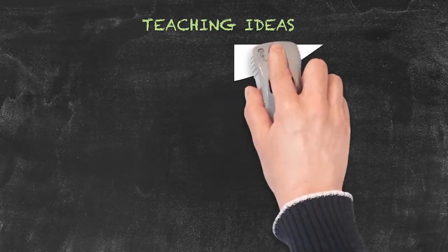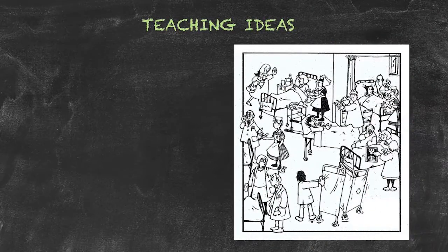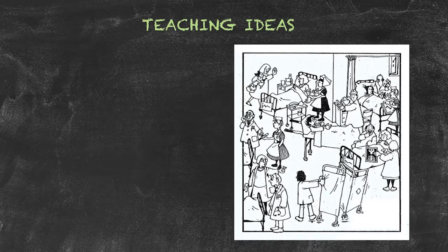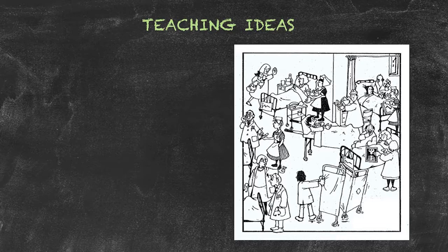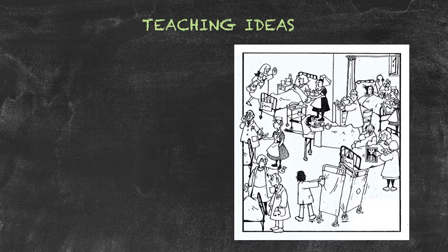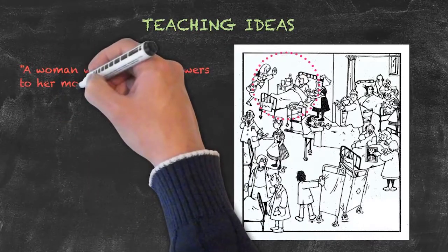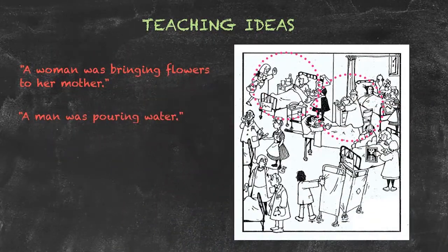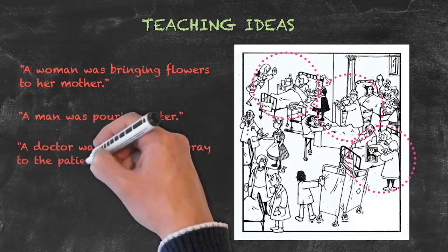Very similar to presenting a picture with activities to students and having them report what the people are doing at the present time using the present continuous tense. What we'll do here, is have the students do the same thing. But now, we'll give them 2 or 3 minutes to look at the picture, and try to remember what the people are doing, before we turn the picture over, and then ask the students to create sentences about what the people were doing in the picture. Hopefully, the students would be able to create sentences such as, A woman was bringing flowers to her mother. A man was pouring water. A doctor was showing an x-ray to the patient.